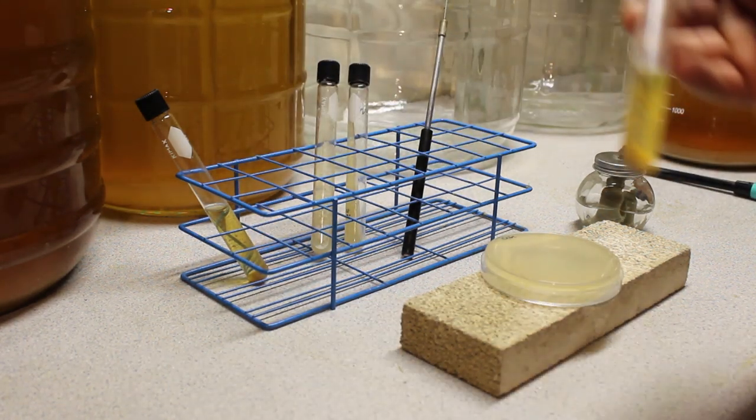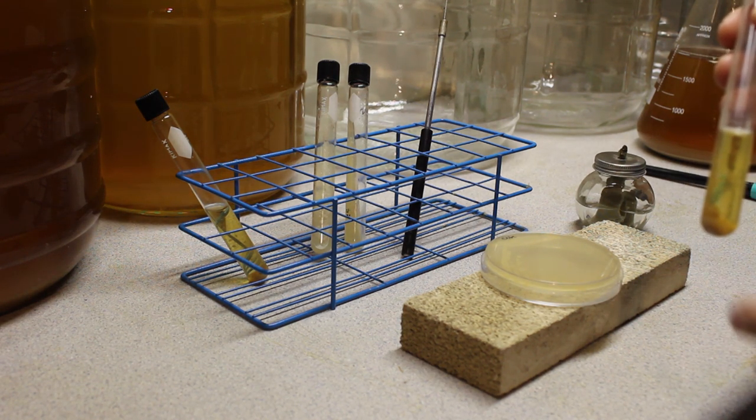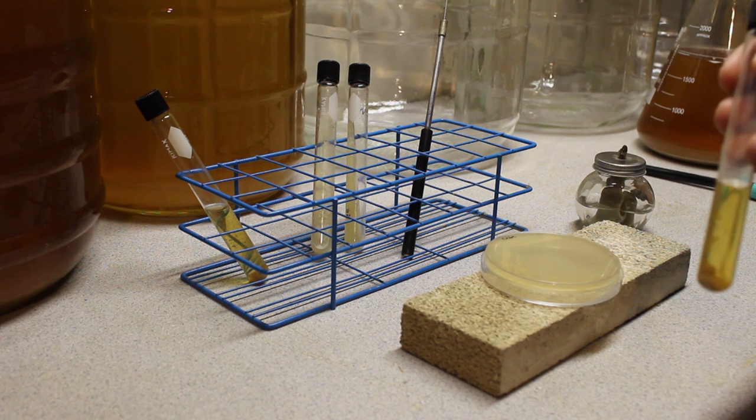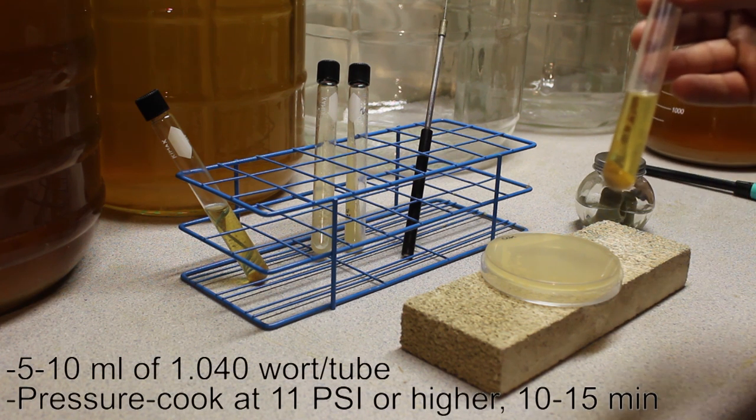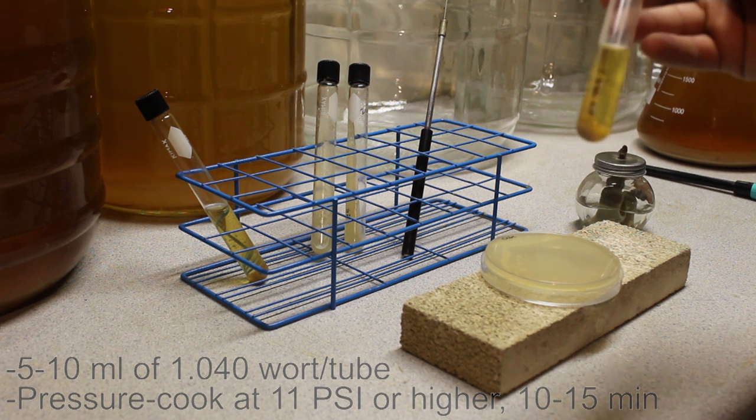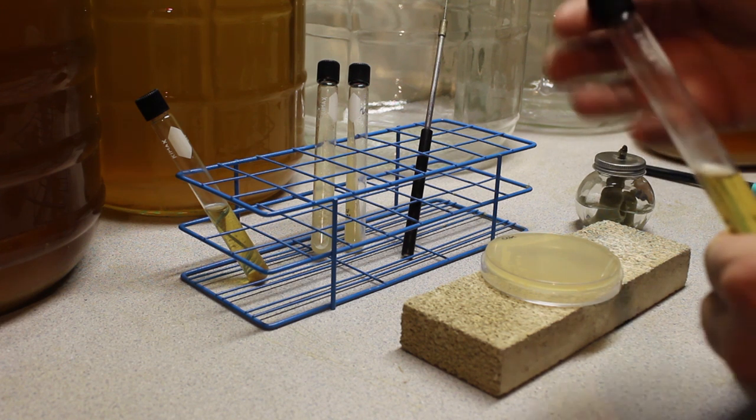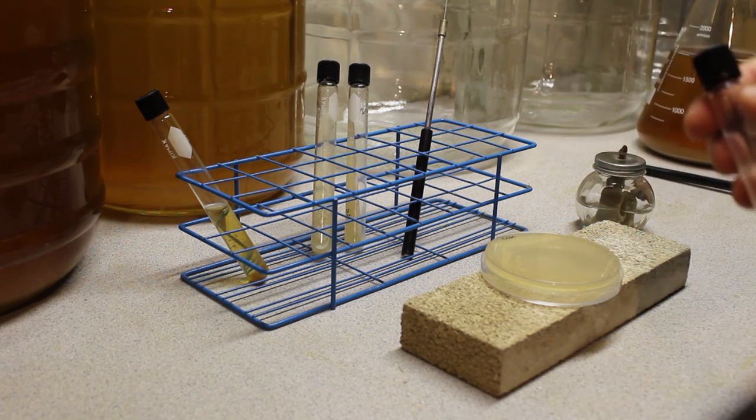Now for these tubes of wort, these are actually very simple to make. Simply make up some wort at 1.040 gravity, fill the tubes about halfway and run them through your pressure cooker or your Instapot at a high canning pressure for about 10 to 15 minutes and that'll sterilize these completely. You will get some protein precipitate but this is harmless, and these can then be stored pretty much indefinitely as long as you keep those caps on nice and tight.